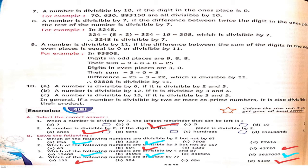When a number is divided by 7, what is the largest remainder that can be left? The options are 7, 6, 5, and 10. If we divide a number by 7, the largest possible remainder is 6, since the remainder must always be less than the divisor. So option 6 is correct.